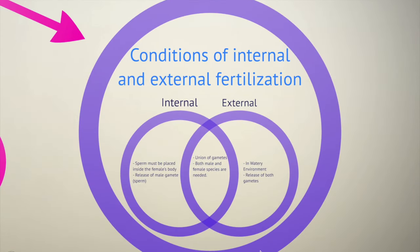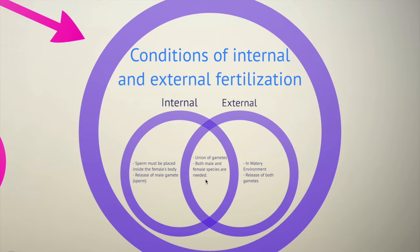Let's look at the conditions for internal and external fertilization. For internal fertilization, sperm must be placed inside the female's body, released by the male gamete. For external fertilization, the sperm must be released in a watery environment, and both sperm and egg must meet in that water environment. The species must be the same, and finally they meet together and a baby is formed after fertilization.